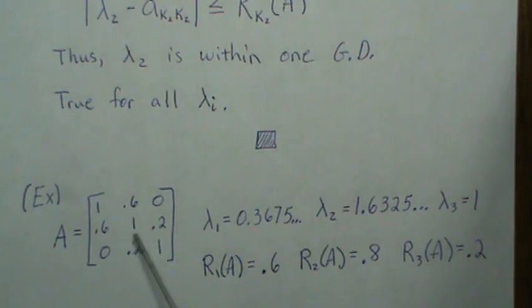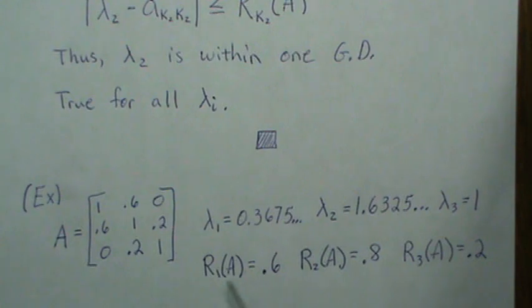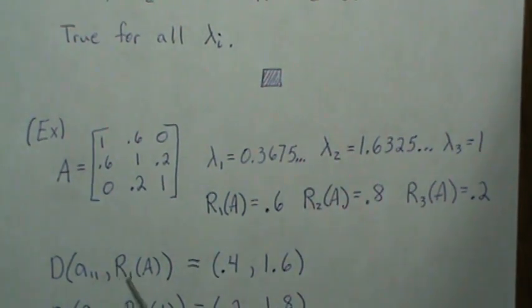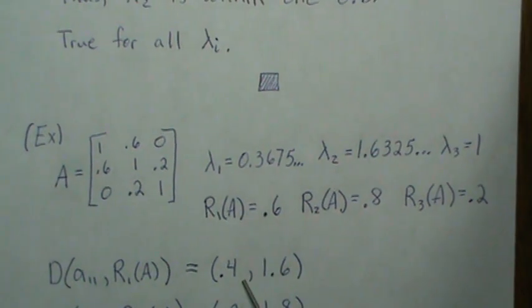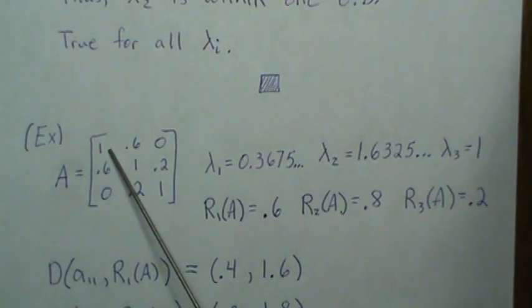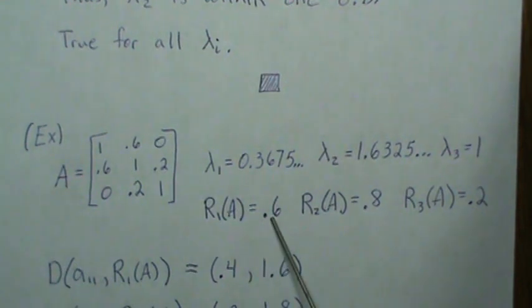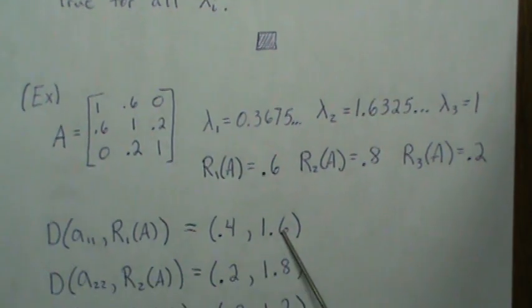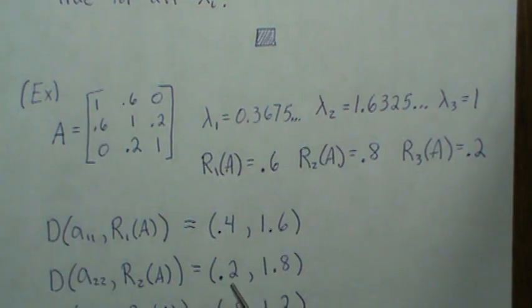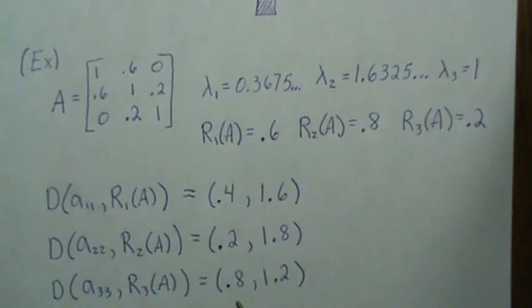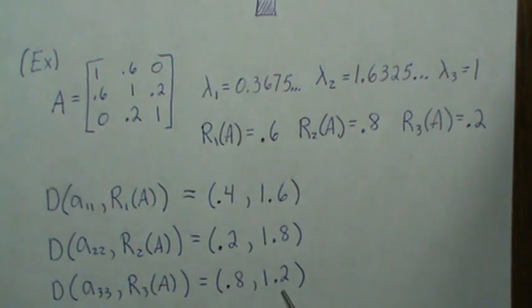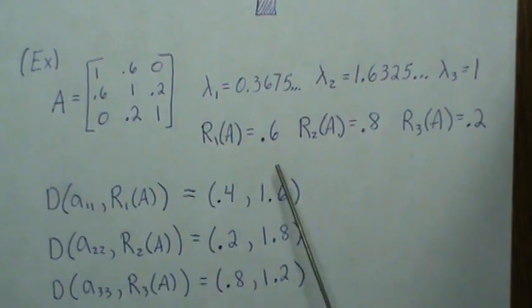So the Gershgorin disk, the first one is going to be 1 minus 0.6 to 1 plus 0.6, the second disk we'll get 0.2 and 1.8, and the third we'll get 0.8 and 1.2.